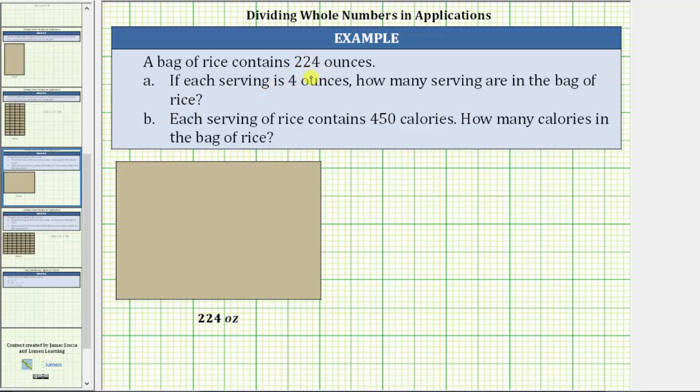A bag of rice contains 224 ounces. For part A, if each serving is four ounces, how many servings are in the bag of rice?